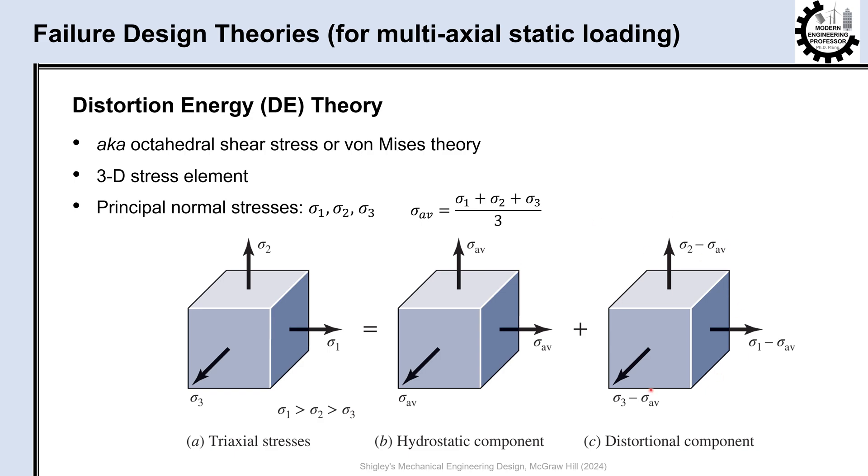The second stress element is subjected to stress values of average stress subtracted from principal stresses. This stress element undergoes pure angular distortion and no volume change, and is responsible for yielding.